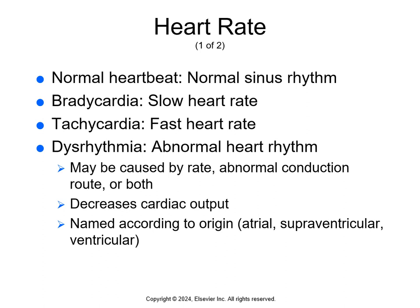Normal sinus rhythm happens when an impulse begins in the SA node and travels as it's supposed to. During activity, excitement, fever, or shock, the body needs more oxygen-rich blood, so the heart rate might increase to 100 beats per minute or more. When resting or sleeping, the body needs less oxygen-rich blood, so the heart rate decreases, sometimes even less than 60 beats per minute.